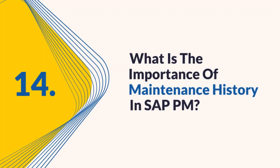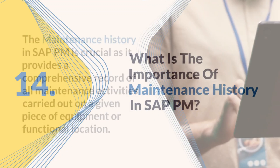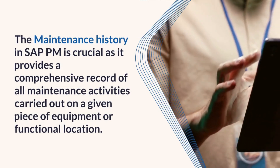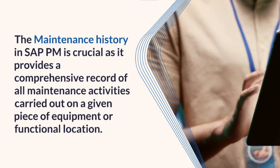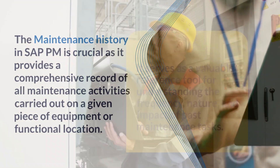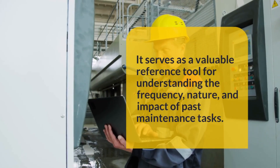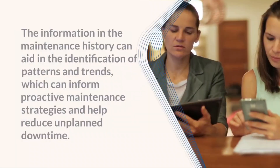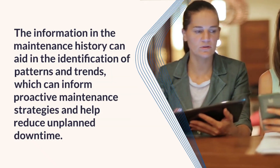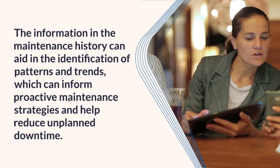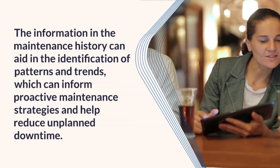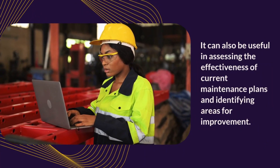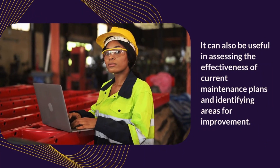Question 14: What is the importance of maintenance history in SAP PM? The maintenance history in SAP PM provides a comprehensive record of all maintenance activities carried out on a given piece of equipment or functional location. It serves as a valuable reference tool for understanding the frequency, nature, and impact of past maintenance tasks. The information can aid in identifying patterns and trends to inform proactive maintenance strategies, reduce unplanned downtime, and assess the effectiveness of current maintenance plans, identifying areas for improvement.